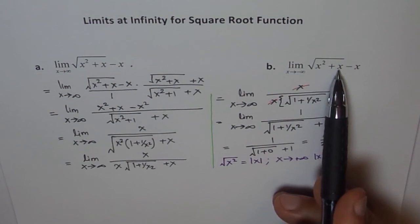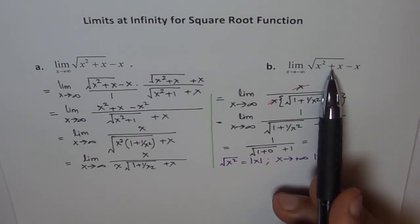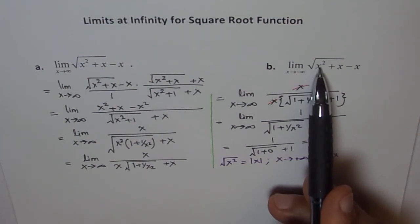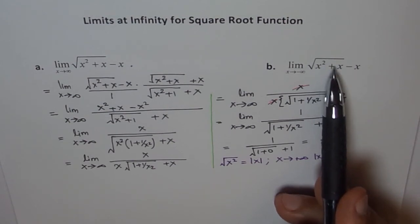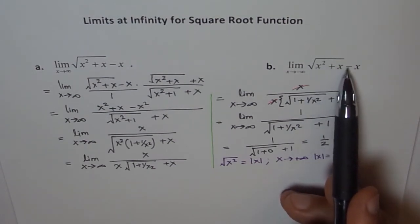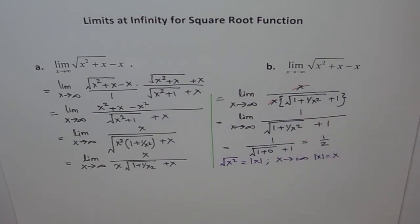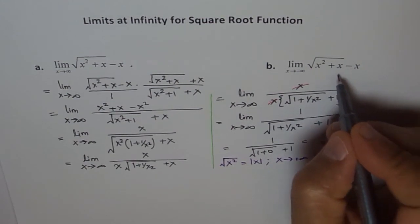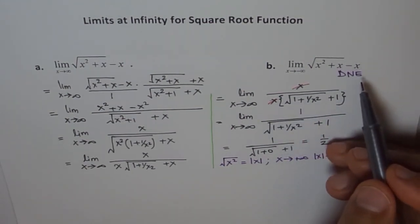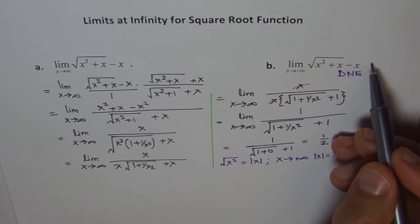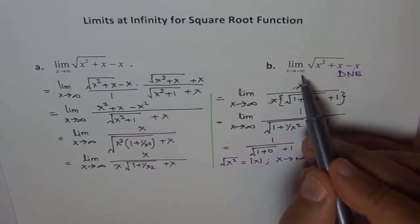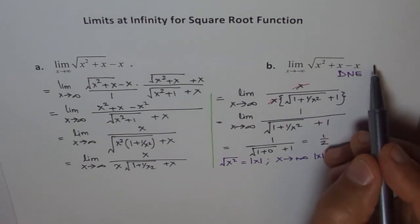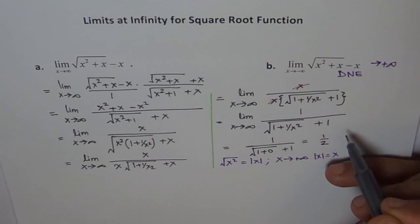When you put in minus thousand: the minus x term becomes positive (minus of minus thousand is plus thousand), and the square root term also becomes positive since squaring a negative gives a positive. The square root value will be on the order of a million (thousand squared), which is much larger than the thousand from minus x. So you land up with two large positive quantities added together, meaning the expression approaches positive infinity. Therefore, the limit does not exist as x approaches minus infinity.